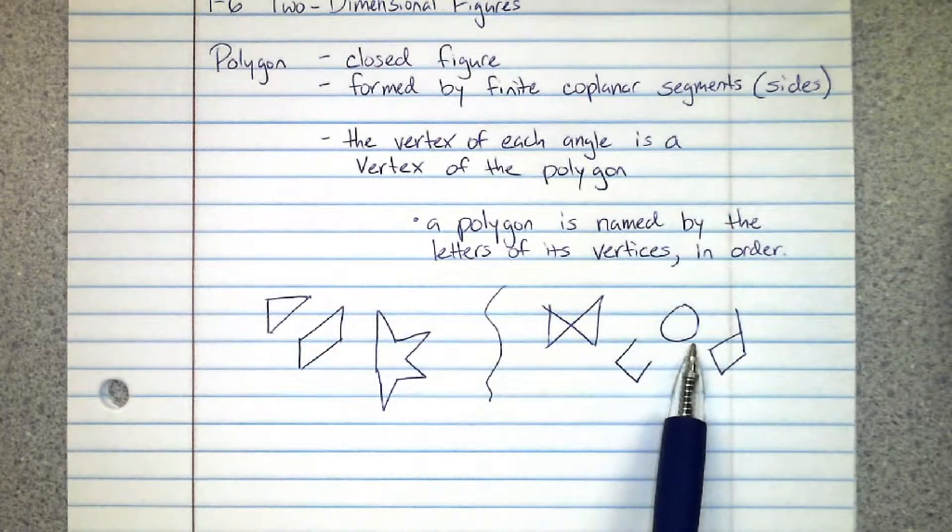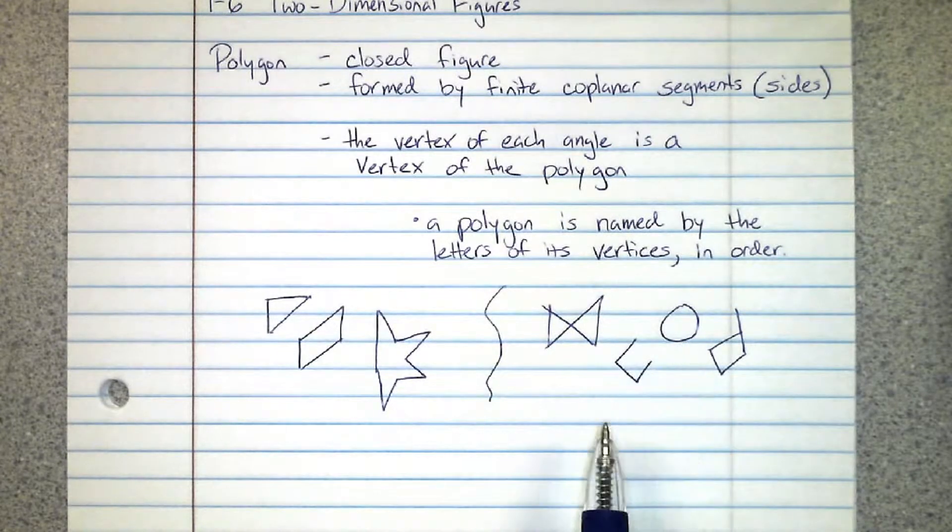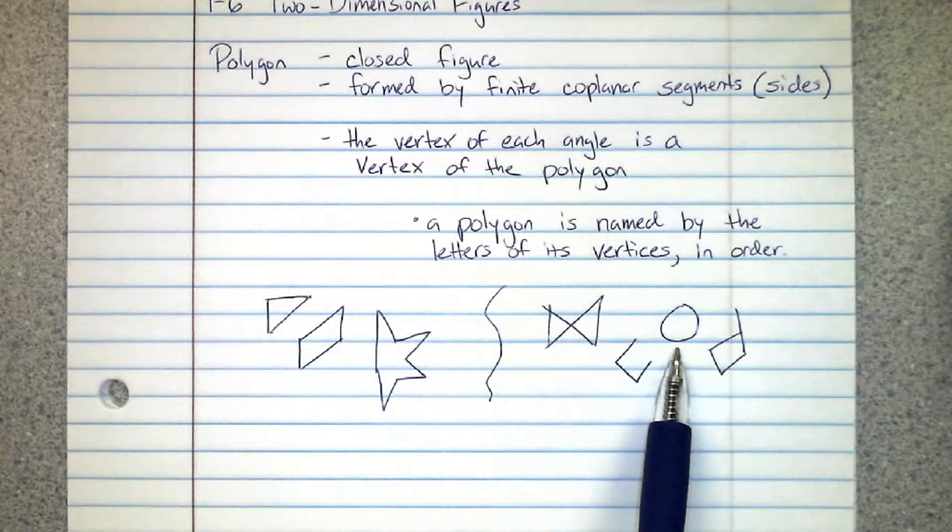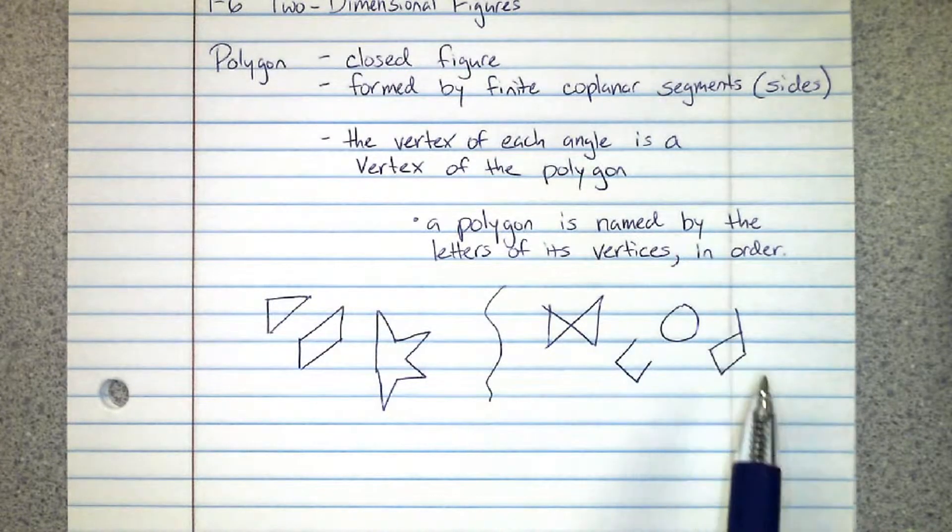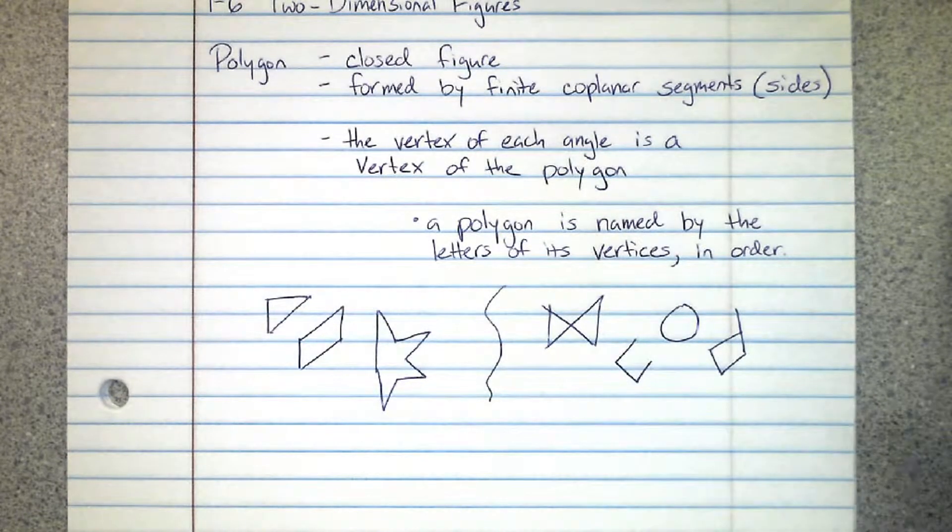These right here are not polygons: circular objects, ovals, wavy things, not closed figures, has overlap, has a little segment hanging off the end - not polygons.